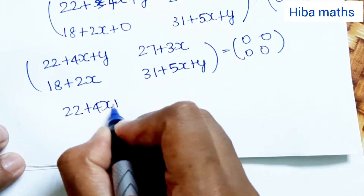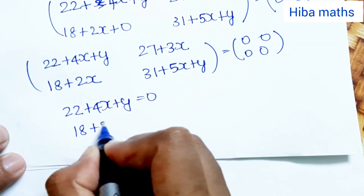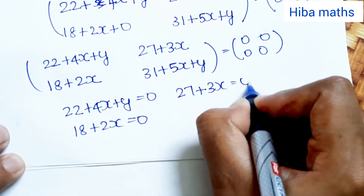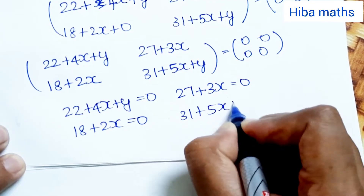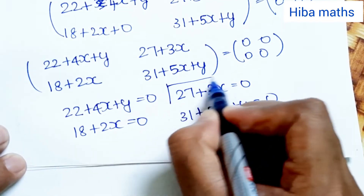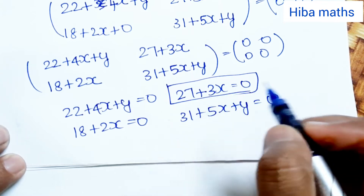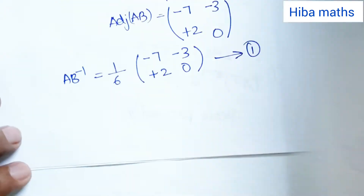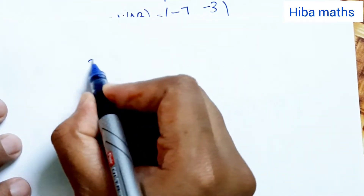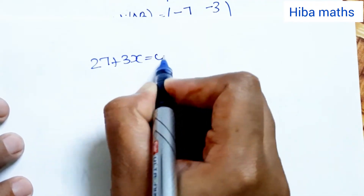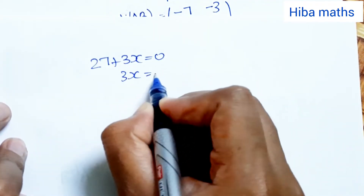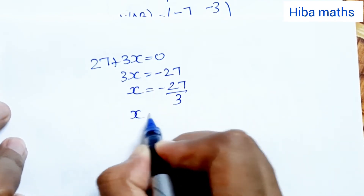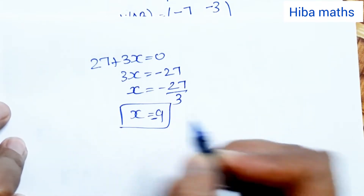From the matrix entries we get equations: 22 + 4x + y = 0, 18 + 2x = 0, 27 + 3x = 0, and 31 + 5x + y = 0. From 27 + 3x = 0, we get 3x = −27, therefore x = −9.